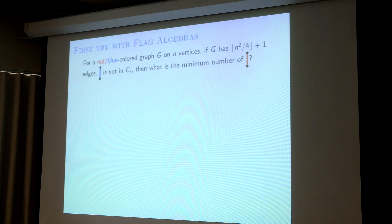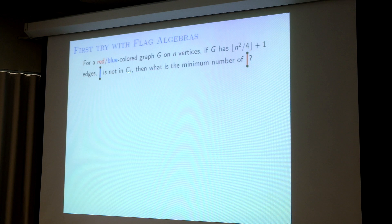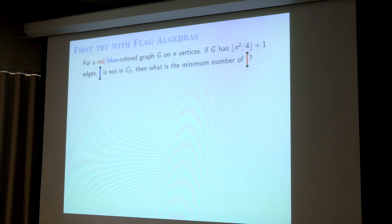Because blue edges are not in C7, if you want to minimize the number of red edges, red edges should be in C7. So this time I look at any graph G, which has three types of edges: non-edges, red edges, and blue edges. This question is basically exactly the same as the conjecture. The flag algebra can only deal with edge density, so you can add such conditions. These two cases we deal with separately.